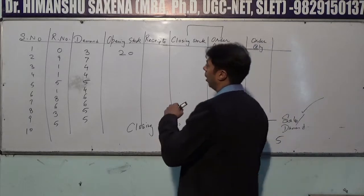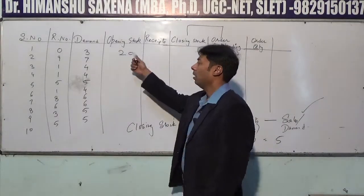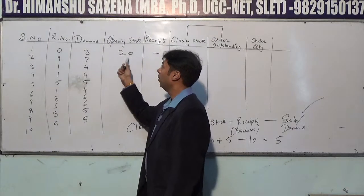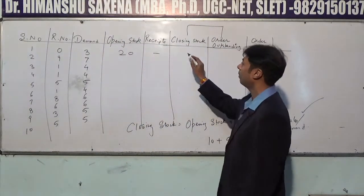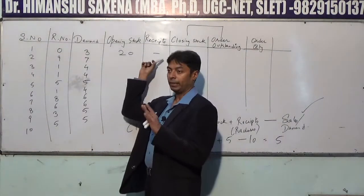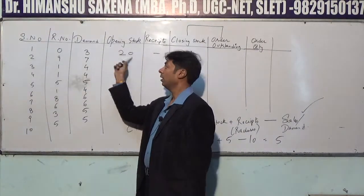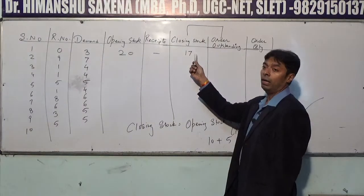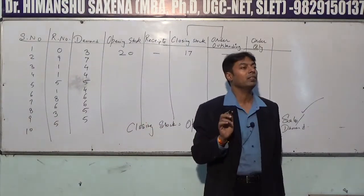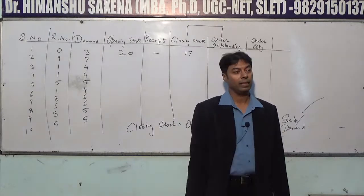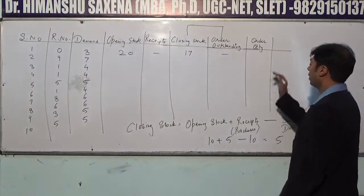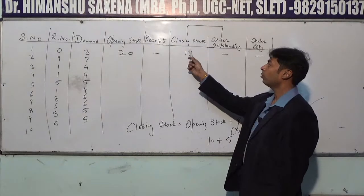Day 1: Opening stock is 20, receipts are zero. Customer demand is 3 units, so closing stock = 20 − 3 = 17. Order outstanding is zero. Total of closing stock plus outstanding = 17, which is more than 15, so no order is placed today.